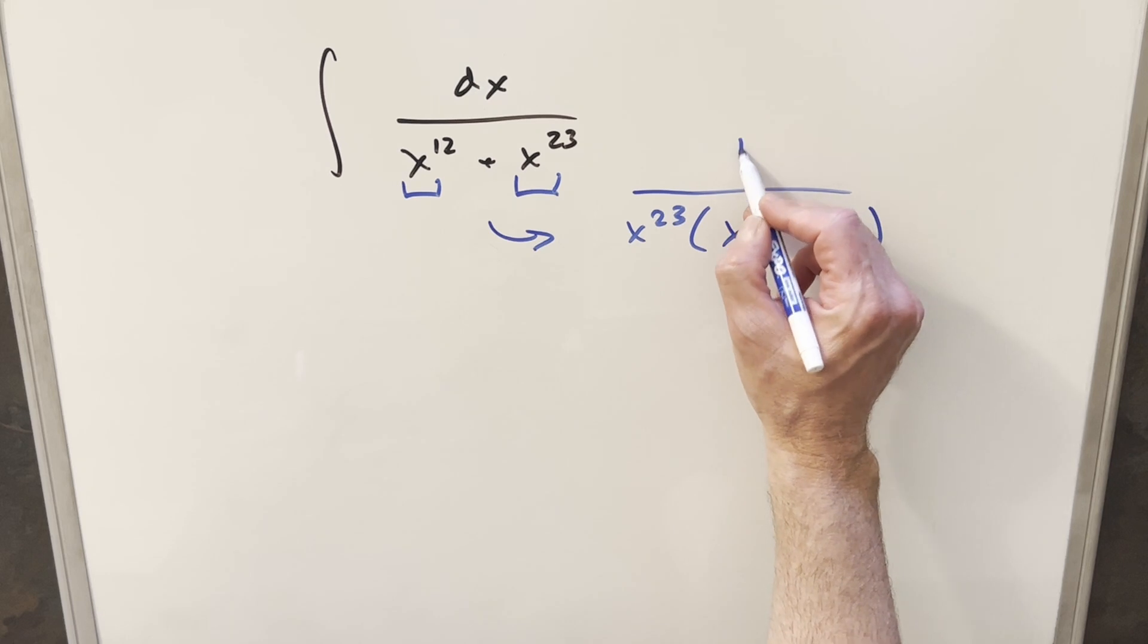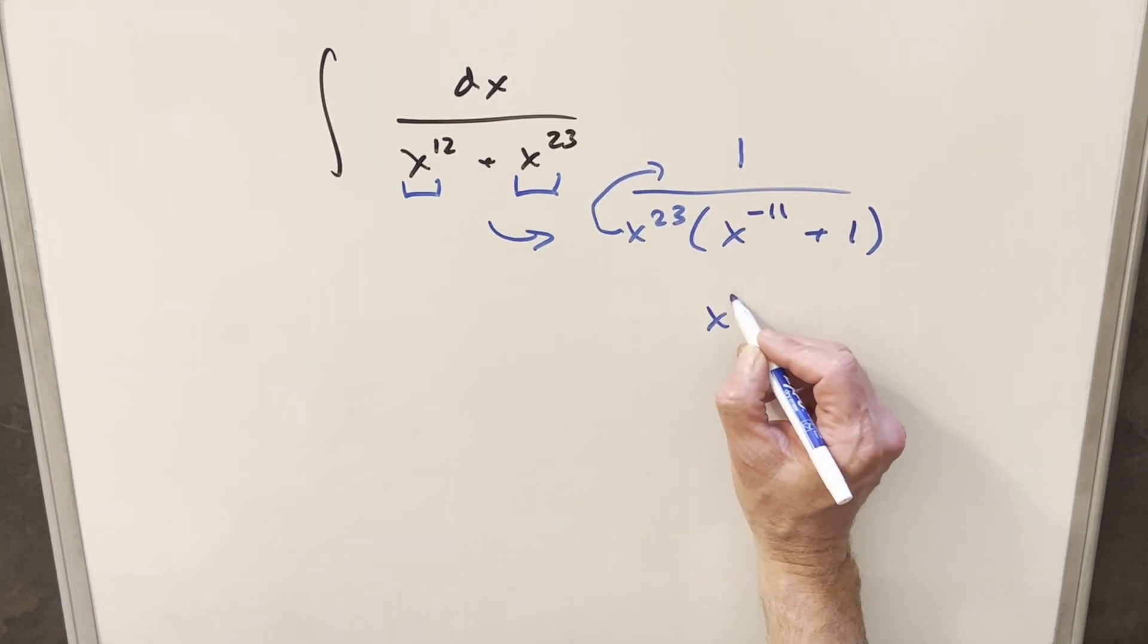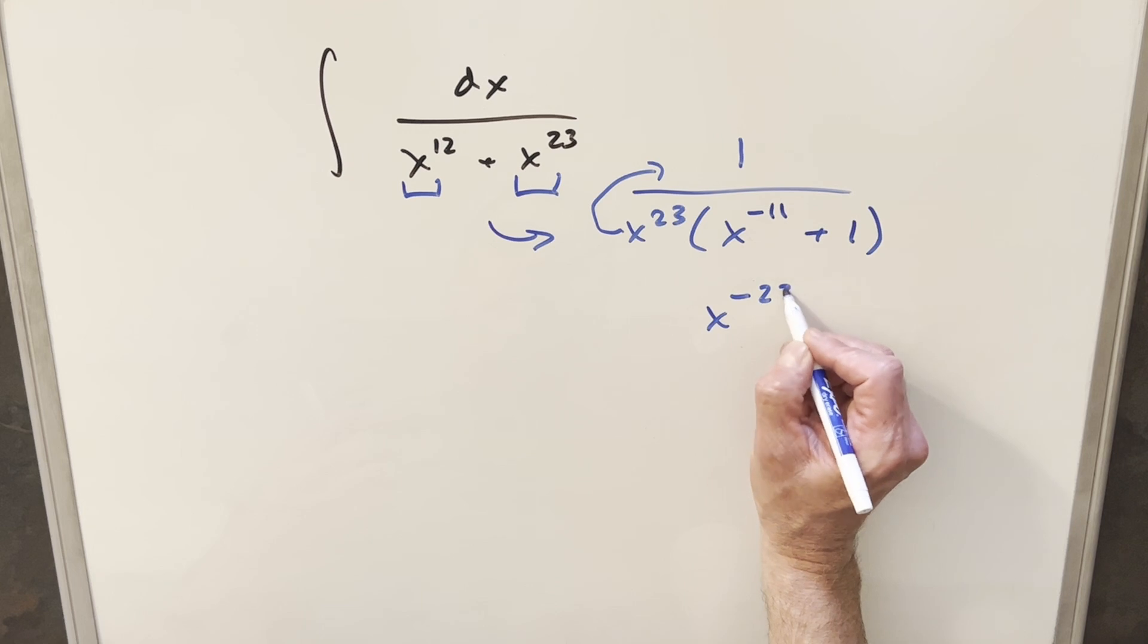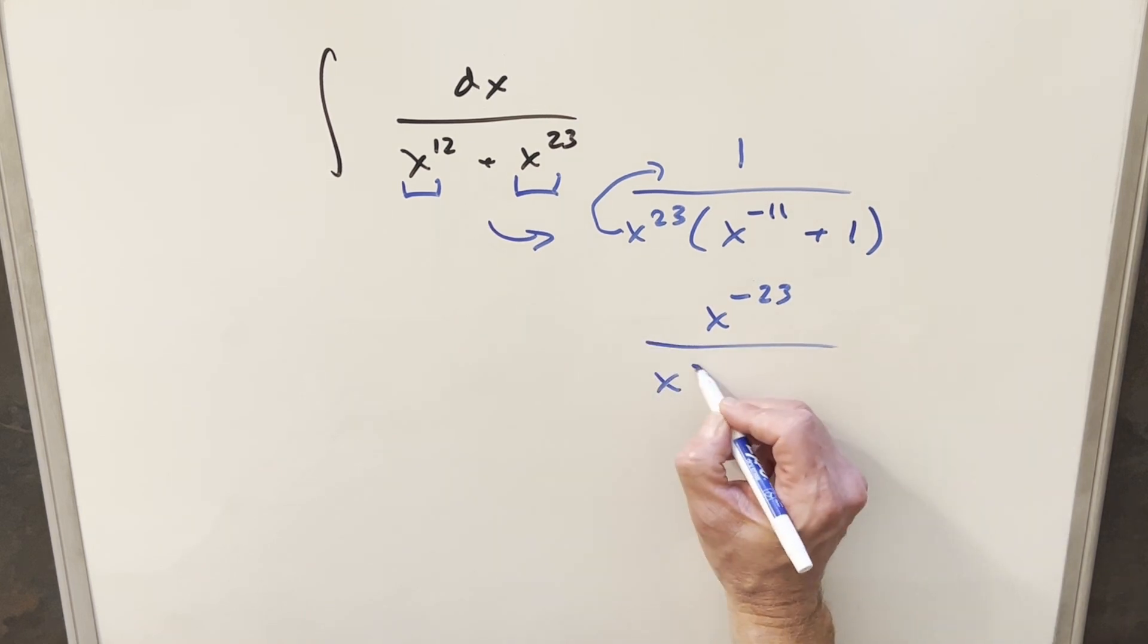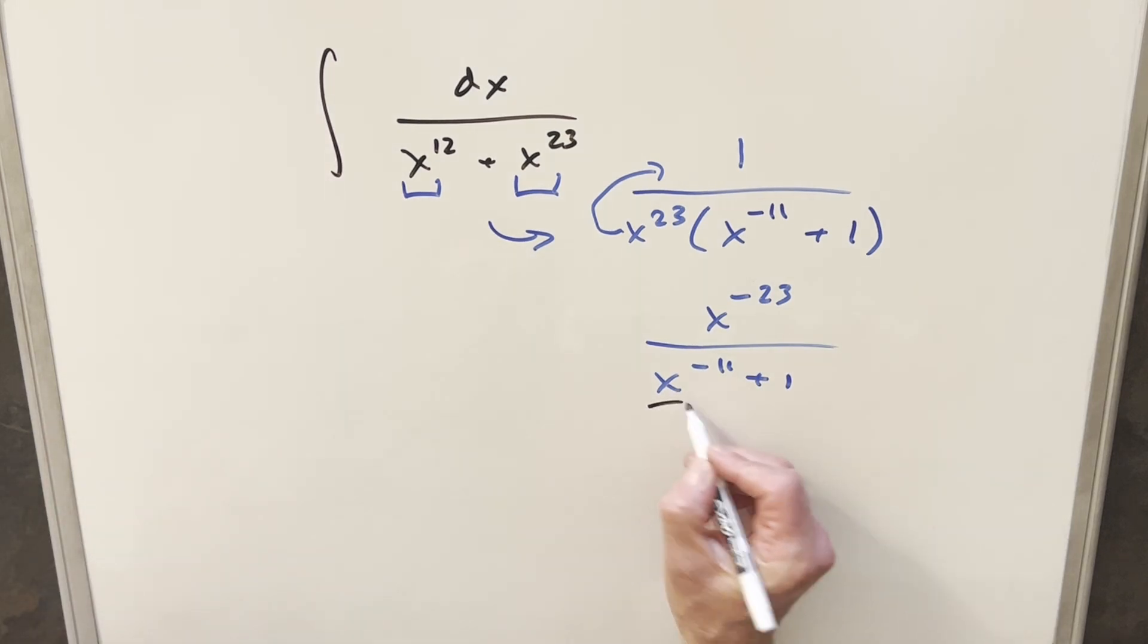And the reason I do it that way is if we put this back as a fraction, we take the x to the 23rd, we bring it into the numerator, this becomes x to the minus 23rd, and then we have this over x to the minus 11th plus 1. I think the reason why this works better than factoring out the x to the 12th is now we have negative exponents here in the numerator and denominator.